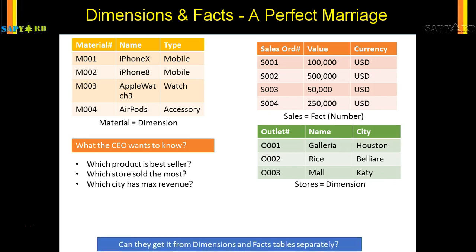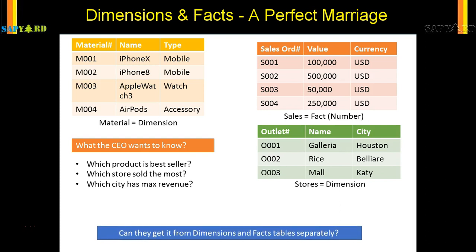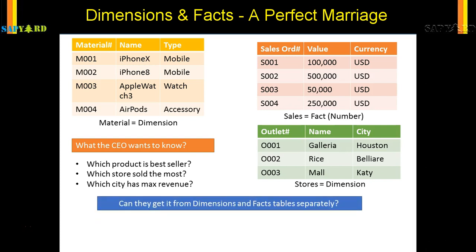Based on these answers they would have to define the future plan for the company. If the stakeholders only look at the dimensions, will they get the information? No. If they only look at the sales table or the fact table, will they get the complete picture? No — they will only see that for a given product this was the sales, but they will not know which site had the maximum sale or which city is the most profitable. So can they get it from dimension and fact tables separately? The answer is no.